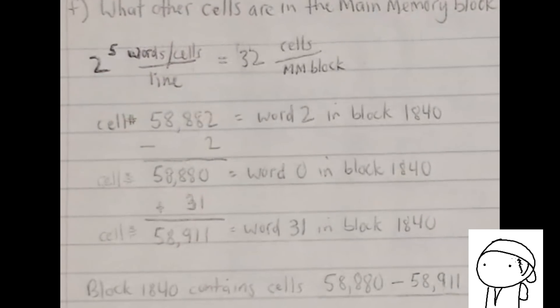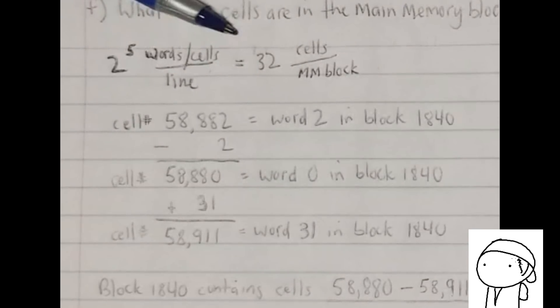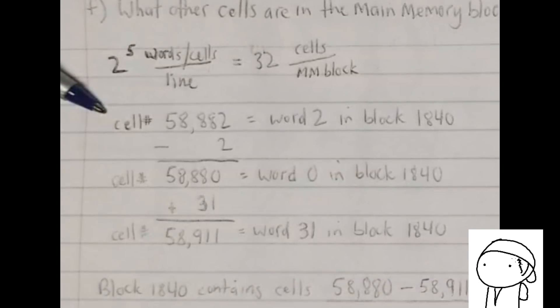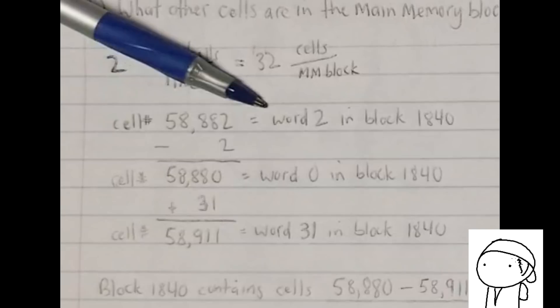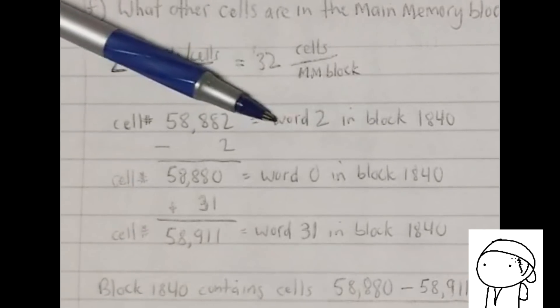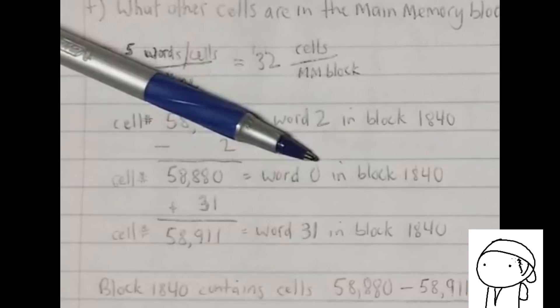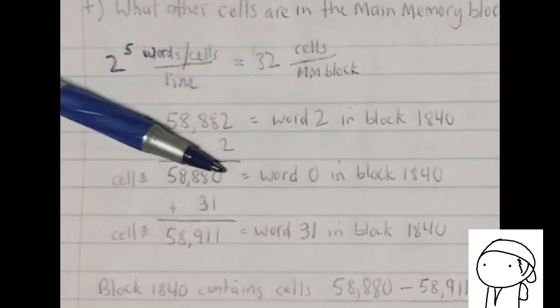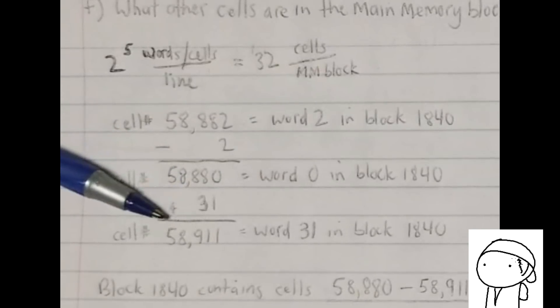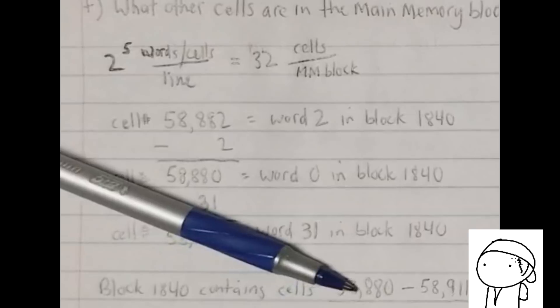All right. So now we want to determine what other cells are in the main memory block 1840. And from earlier, we determined that we have 2 to the power of 5 words per line, which is also the same number of cells per line, which equates to 2 to the power of 5, or 32, cells in each main memory block. And again, determined earlier, we were working with cell 58,882 in main memory, which is equal to word 2 in our block 1840. So to get to the first cell that's in this main memory block, we'll subtract 2, because we're in word 2, and get to cell number 58,880, which would be equal to word 0 in block 1840. And since we know that there's 32 cells in each main memory block, and we're already at word 0, we're going to add 31 to get to the last cell in that block, which would be 58,911. Therefore, this block 1840 contains the cells 58,880, all the way up to 58,911.